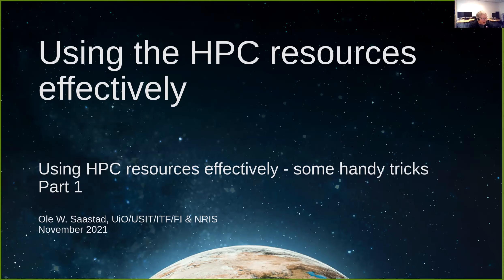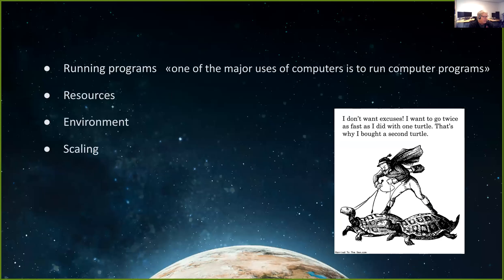You should sanity check when you run, not to waste all the resources in a non-efficient way. This first part is mostly about running programs — specifically for people who run programs they've already got, not people who develop programs themselves. What can you do in the Slurm settings? What kind of environment can you set up to get better performance than all the defaults?